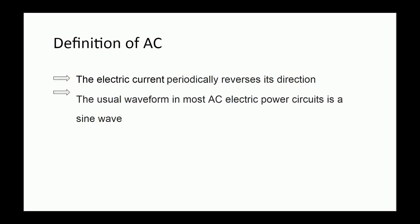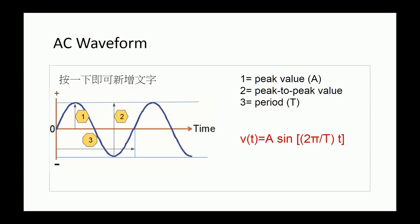Alternating current describes the flow of charge that changes direction periodically. As a result, the voltage level also reverses along with the current. AC can come in a number of forms as long as the voltage and current are alternating. The sine wave is the most common one. The arrowhead indicated by number 1 means the peak value of this AC, represented by letter A.